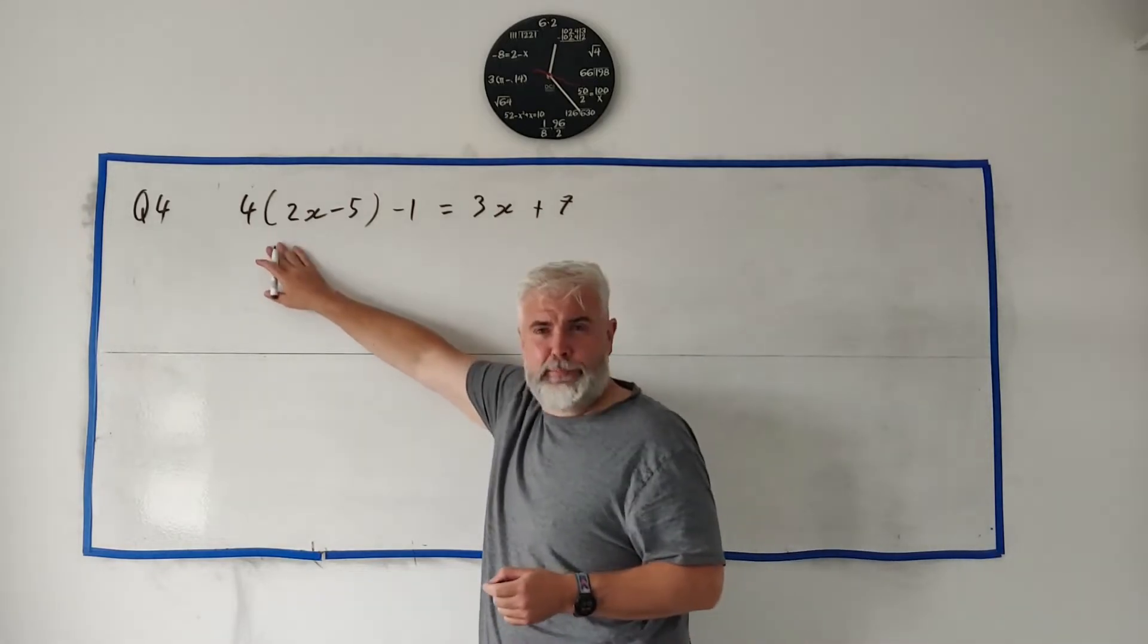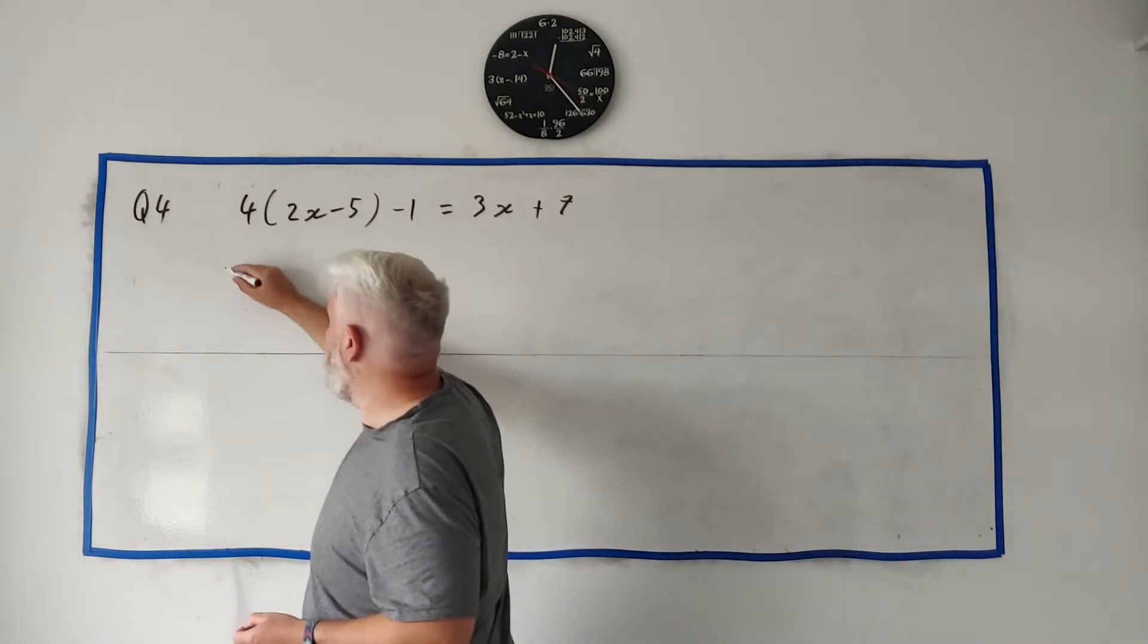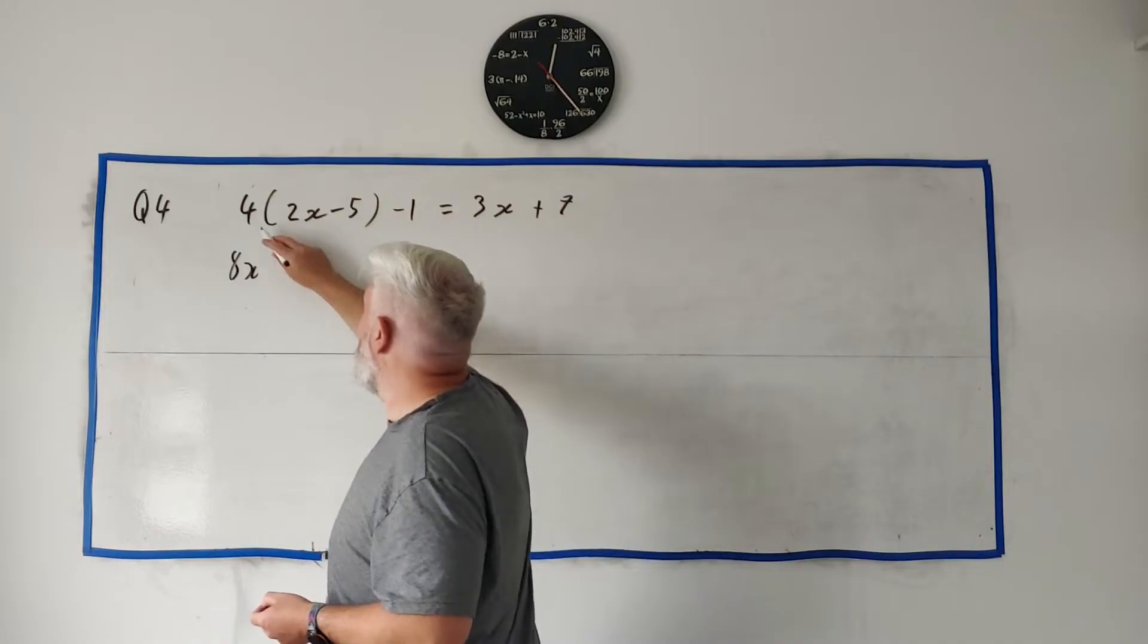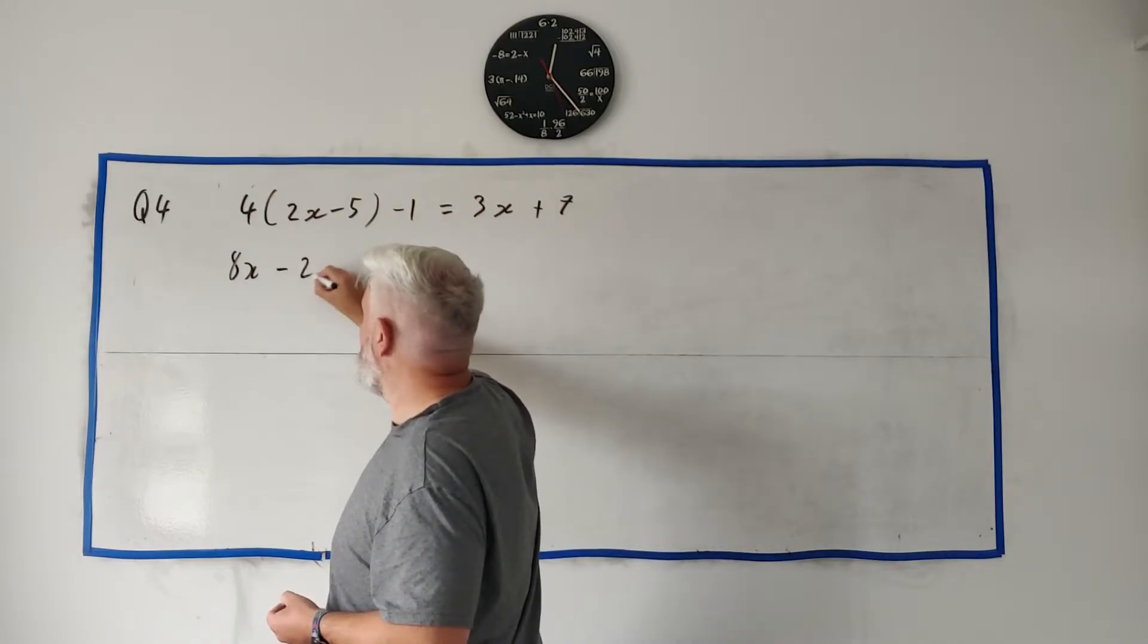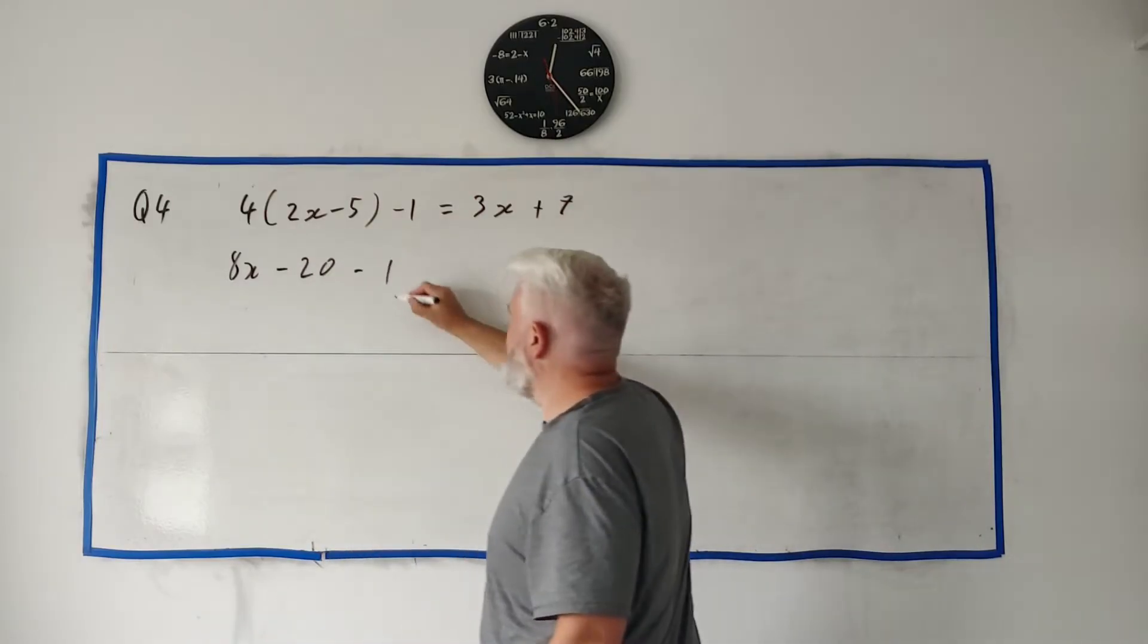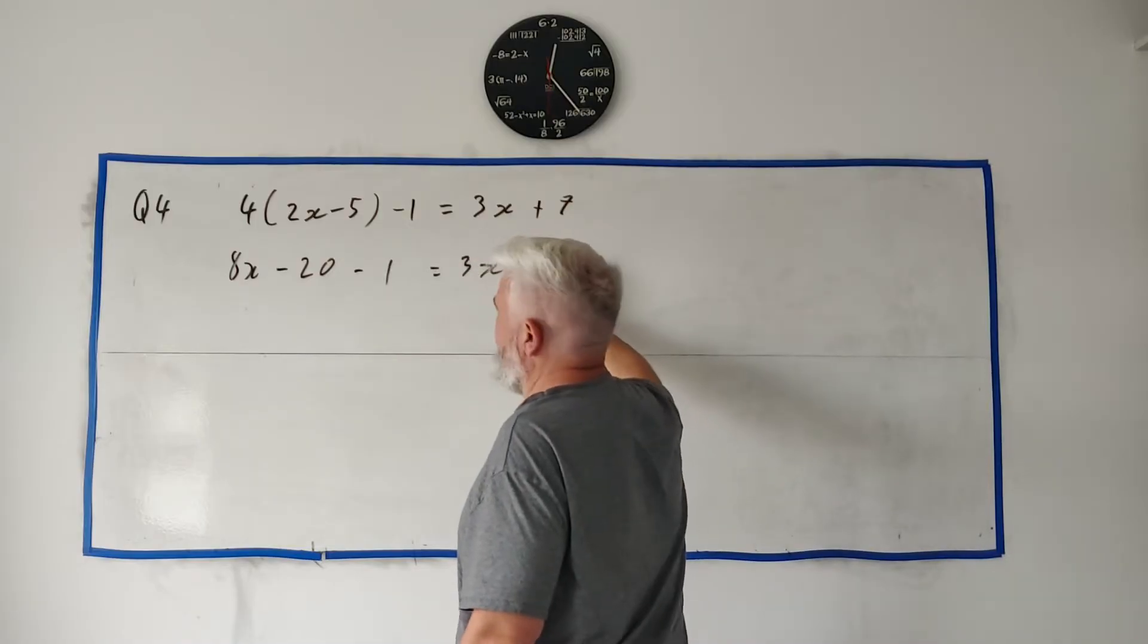So what do we do? Let's multiply this bracket out first. Let's multiply the 4 in, we get 8x. 4 times 2 is 8x, 4 times minus 5 is minus 20, minus 1 is still out here, equals 3x plus 7.